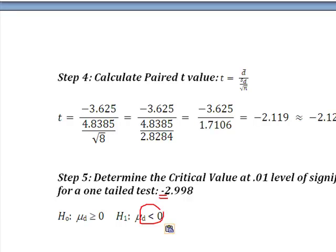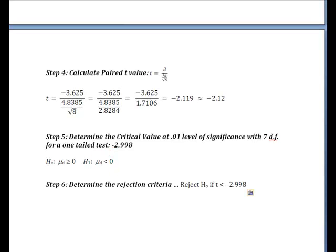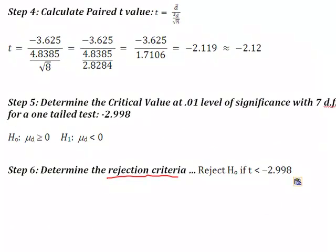So just one or two steps to go, and we're done. The next step is simply determining what my rejection criteria is. Based on the critical value, if this t of negative 2.12 is less than negative 2.998, if t is less than negative 2.998, then I'm going to reject H₀. So I'm going to compare my calculated test statistic to my critical value and then make my rejection or do not reject decision in this very last step.